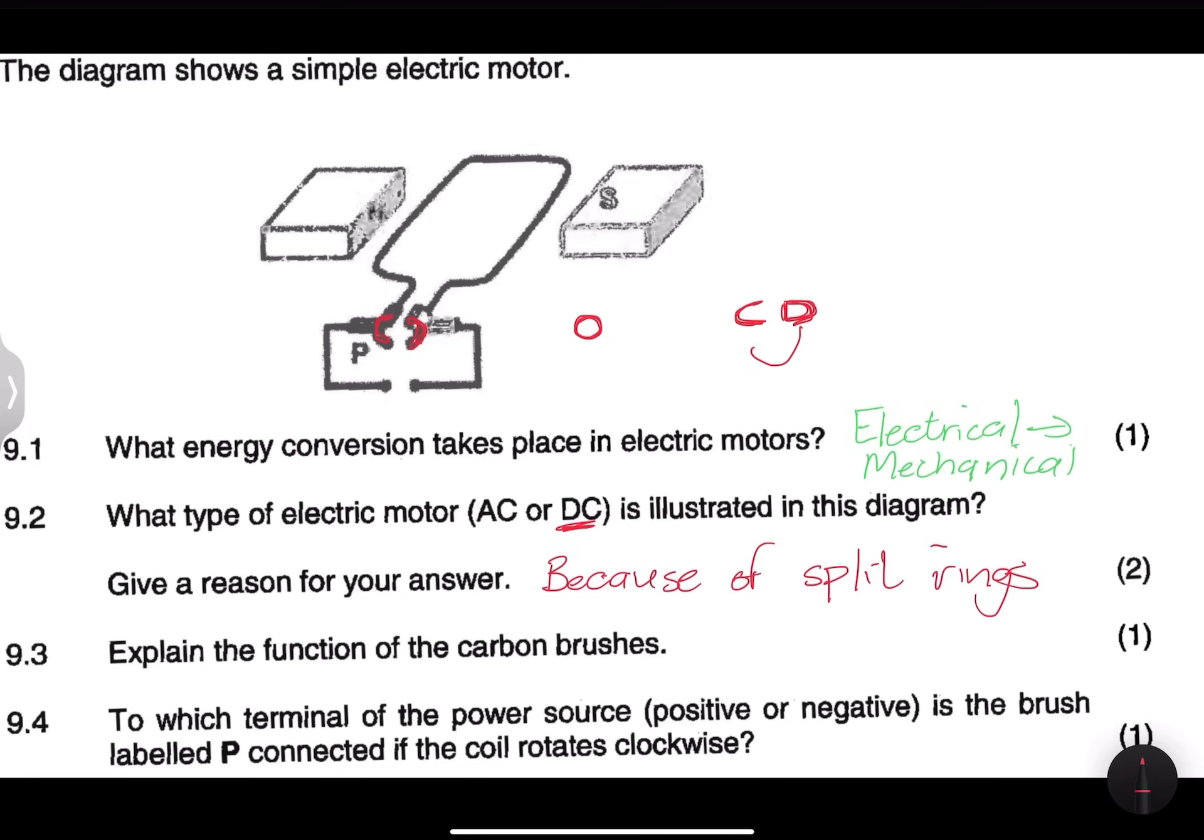They say explain the function of carbon brushes. Please remember that what carbon brushes do is that they ensure that there's electrical contact going to the armature. So in this case, they just provide an air for electrical or you can say they ensure that current is able to flow into the armature. So that's electrical contact or flow of current into the armature. So that's the function of a brush.